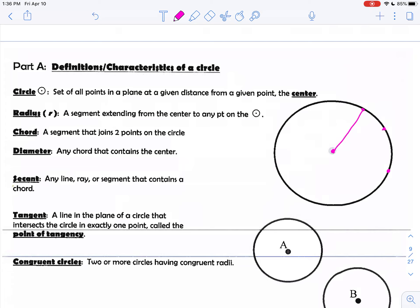The radius is defined as the segment extended from the center to any point on that circle. So we'll call that R.